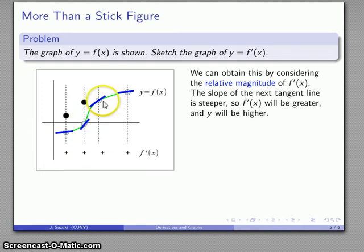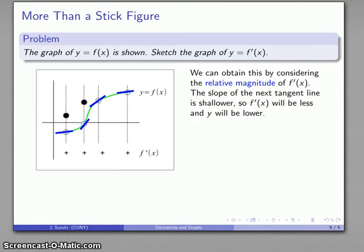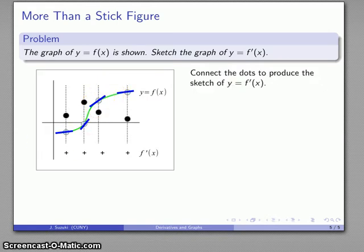Continuing the analysis: at this next point here's the tangent line. This line is steeper than the previous one, so the slope is greater and the derivative will also be greater. But then the next point has a tangent line that is not as steep, so that point should actually be a little bit lower down to reflect the fact that the slope is not as great. At the last point I again have a positive slope, but it's even smaller, so the corresponding point should be even lower down. Now I connect the dots, and there's my sketch of y equals f prime of x.